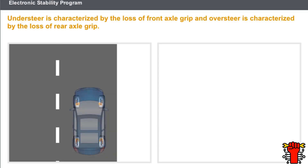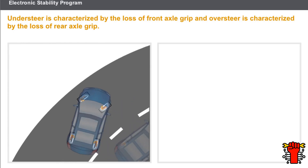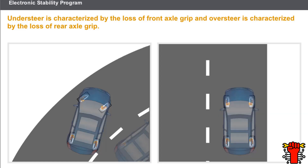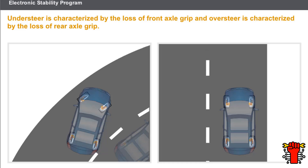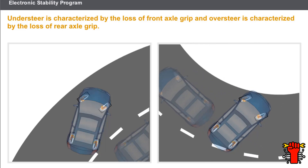Understeer is characterized by the loss of front axle grip. The vehicle departs from its path and moves towards the outside of the corner despite full steering lock being applied. Understeer is often caused by the vehicle traveling too fast. Oversteer is characterized by the loss of rear axle grip, and may be caused when the accelerator pedal is released suddenly when cornering. The vehicle then departs from its path and moves towards the inside of the corner, and in extreme cases this may be revealed by the vehicle spinning.